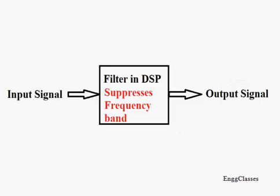Likewise, in DSP, a filter is a device or a process which removes some unwanted components or features of a signal by partially or completely suppressing the frequency band.